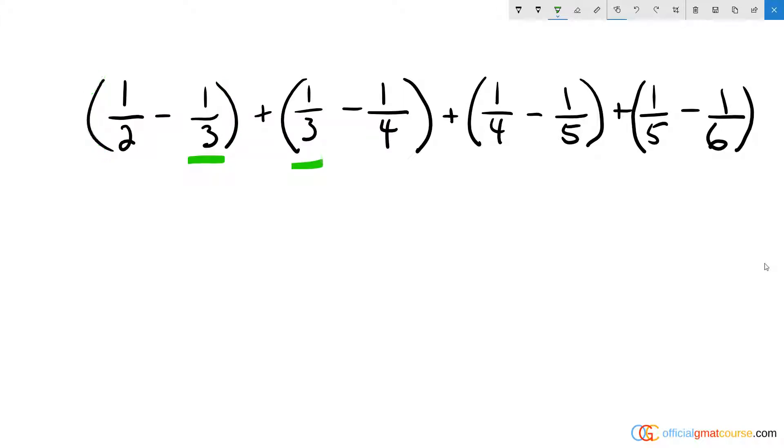So if none of these parentheses really exist, then we would have one-half minus one-third plus a third, and obviously those two would cancel out. Then we have minus a quarter plus a quarter, those two cancel out. Minus a fifth plus a fifth, those two cancel out.